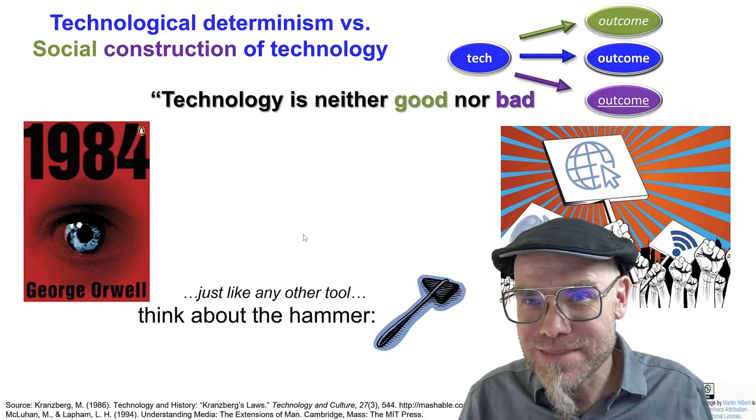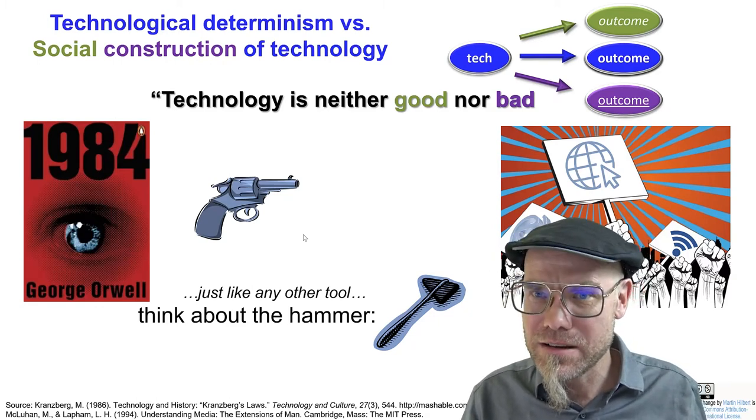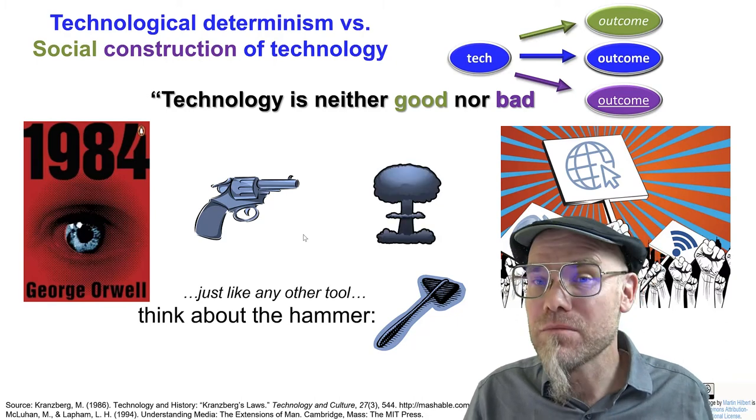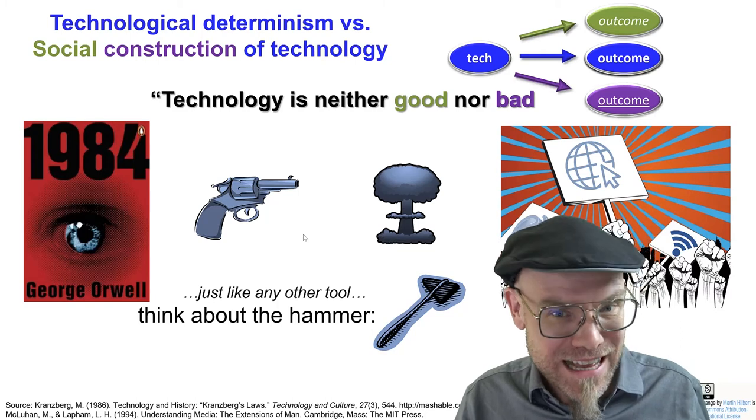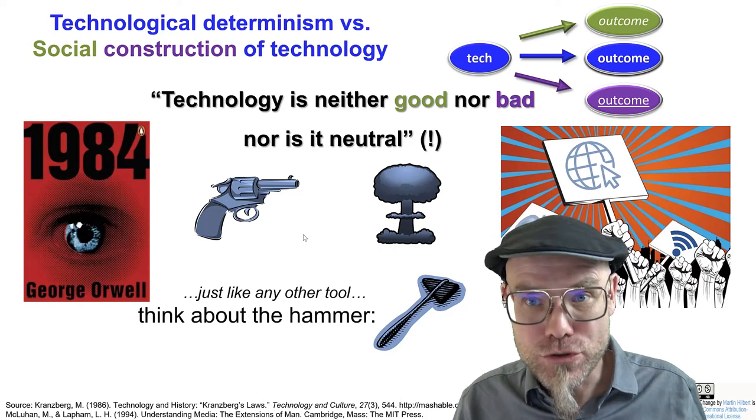In reality, technology is also not neutral. Guns are a technology that are made to shoot life. And bombs are a technology that are made to blow things up. So, technology is neither good nor bad, nor is it neutral.